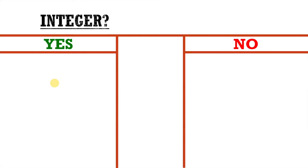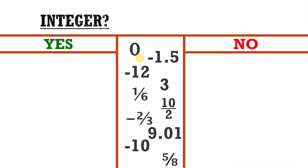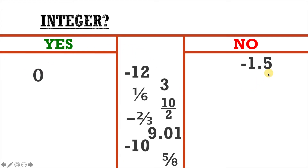Here we have two columns: a yes column and a no column, and we have some numbers. We have to say whether or not each number is or is not an integer. Starting with zero — is zero an integer? The answer is yes, so we'll put that in the yes column. How about negative 1.5? No, that is not an integer because it's not a whole number — it has a decimal place value in it, therefore it cannot be an integer. How about negative 12? That is an integer because it's negative and it's a whole number — there's no fraction or decimal place value.